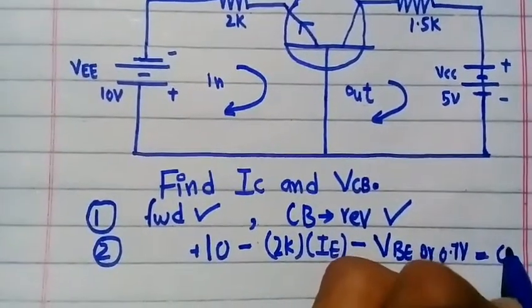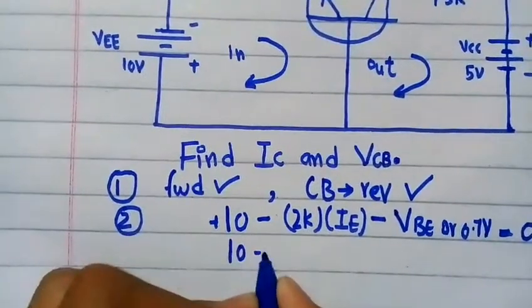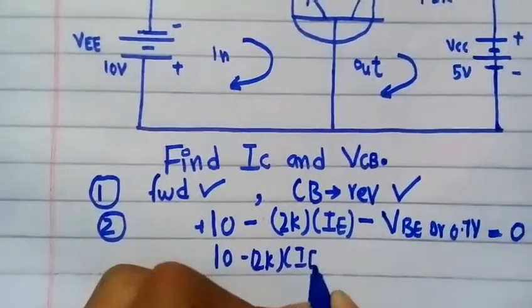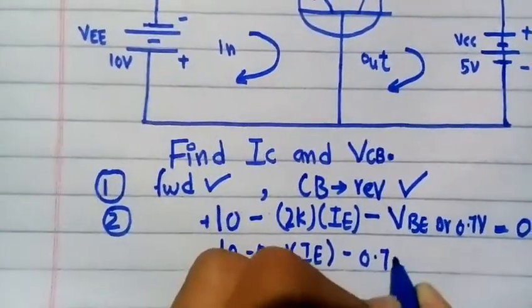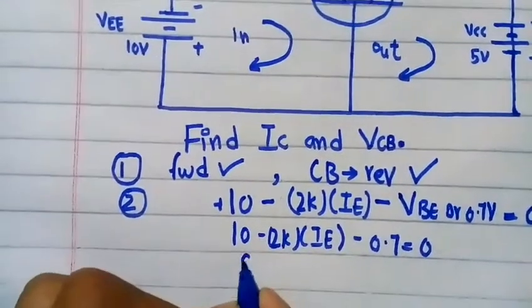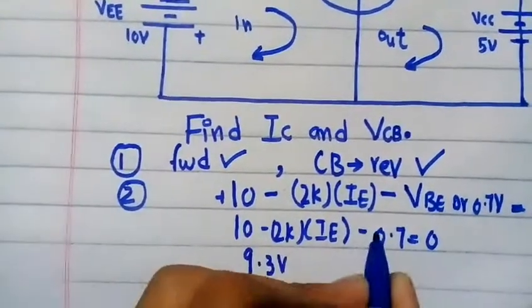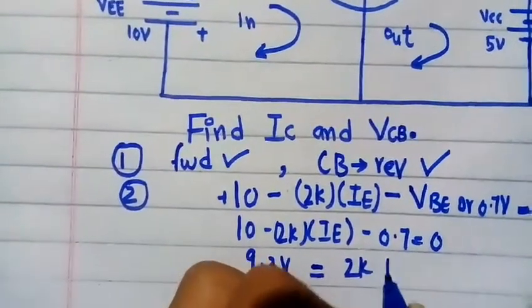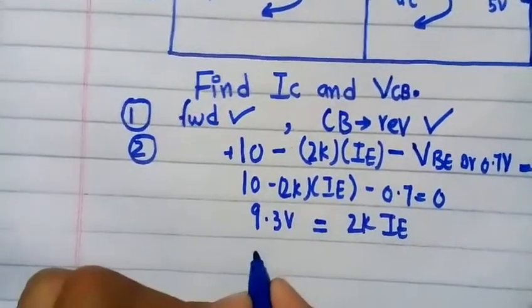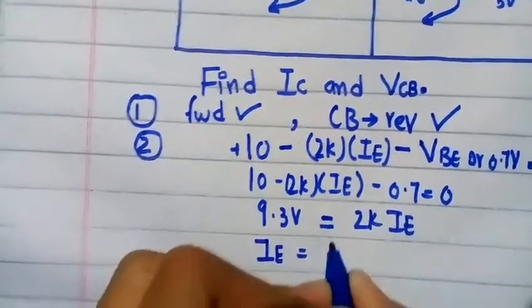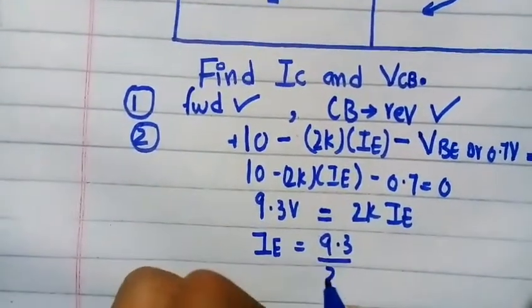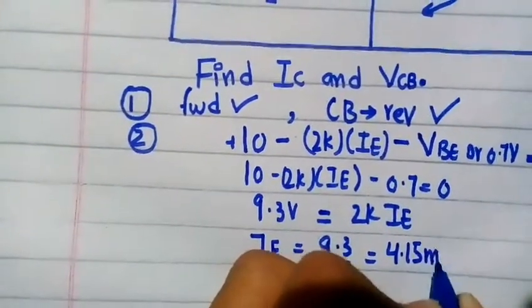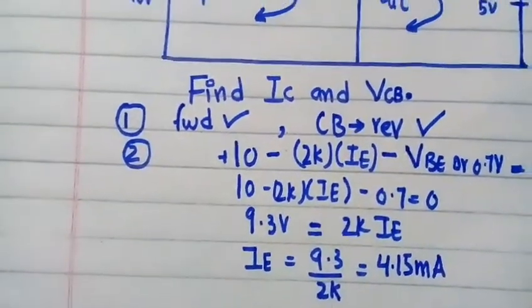Solving the KVL equation: 10 minus 2kΩ × IE minus 0.7 = 0, which gives 9.3 = 2kΩ × IE. Therefore IE = 9.3 divided by 2kΩ, which equals 4.15 mA.